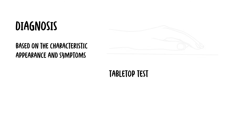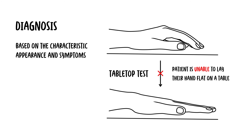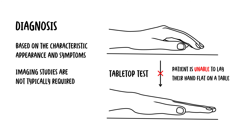The diagnosis of Dupuytren's contracture is primarily clinical, based on the characteristic appearance and symptoms. The tabletop test — where the patient is unable to lay their hand flat on the table — can be a useful diagnostic tool. Imaging studies are not typically required but may be used to assess the extent of disease in severe cases. Remember, the most commonly affected fingers are the ring finger and the little finger.